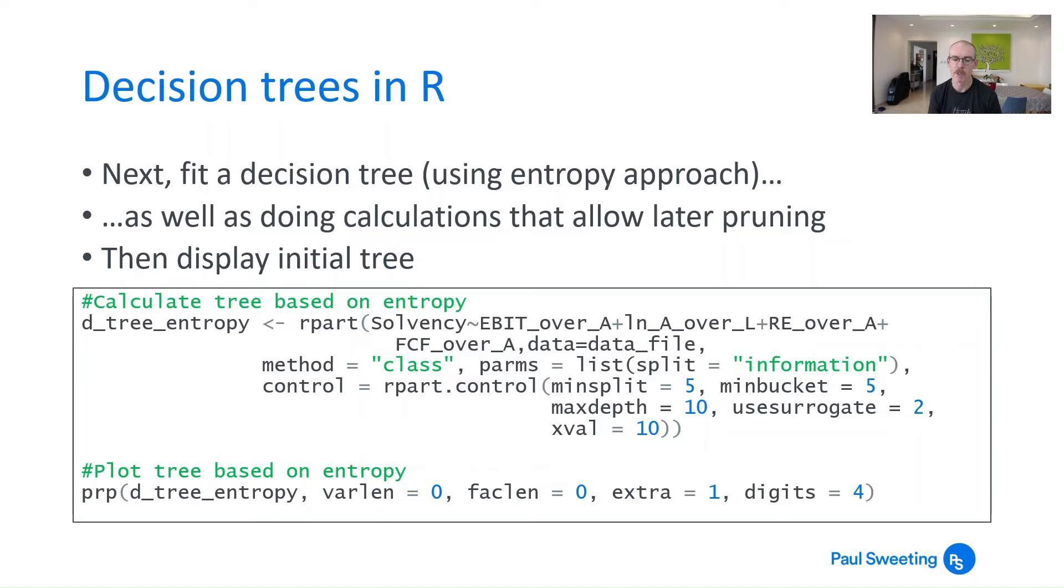Method is class, that means we're doing a classification decision tree rather than a regression one. And then in terms of the parameters, split equals information means we're using entropy rather than Gini impurity. And then this control thing here under rpart.control includes the minimum number of splits, the minimum bucket size, the maximum depth, use surrogate and xval. That's the cross-validation approach, testing across various different trees to see how stable they are which doesn't get used for the initial tree but it's information which is saved for later.